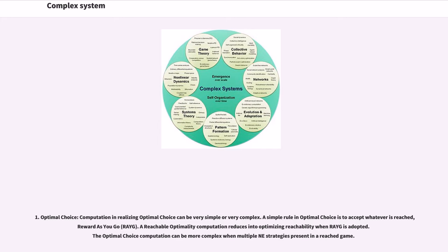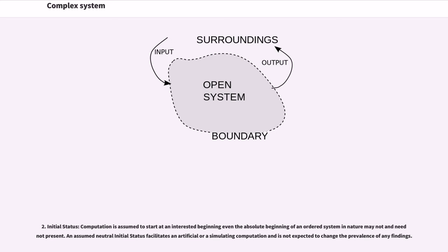A reachable optimality computation reduces into optimizing reachability when RAYG is adopted. The optimal choice computation can be more complex when multiple Nash equilibrium strategies present in a reached gain. 2. Initial status: computation is assumed to start at an interested beginning even though the absolute beginning of an ordered system in nature may not and need not be present. An assumed neutral initial status facilitates an artificial or simulating computation and is not expected to change the prevalence of any findings.